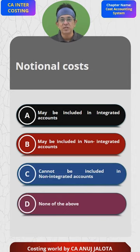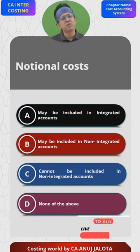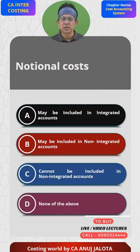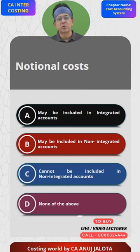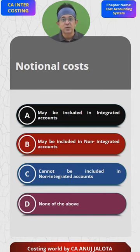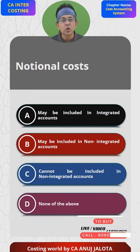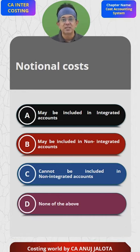Imagine there is a company like Maruti that has its own factory but it's fully depreciated, so the depreciation they will be writing will be zero. On the other hand, a rival of Maruti — say Hyundai — has a factory taken on rent, so in its cost sheet they will be writing rent as part of factory overhead.